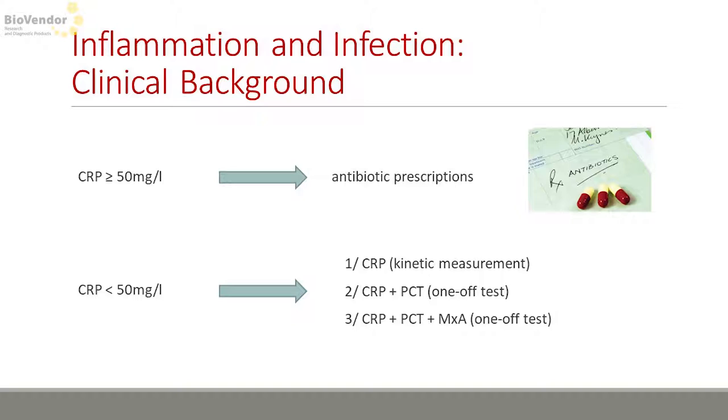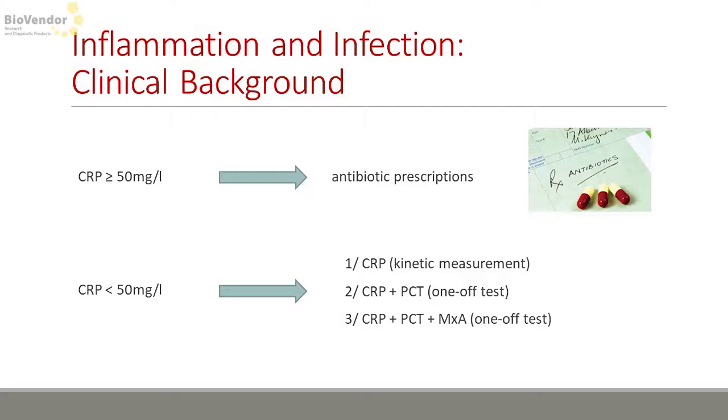But in case the CRP level is under 50 milligram per liter, there are several options to consider. The first is repeated measurement of CRP, or you can measure in one setting CRP plus procalcitonin. What we recommend is also to determine CRP plus procalcitonin plus MXA. The reason is that at those very low levels of CRP, there might be either viral infection or an early stage of bacterial infection, and therefore CRP value alone is not sufficient information.